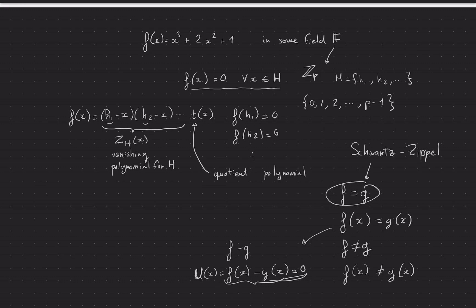And the number of x's that solve this equation cannot be bigger than the degree of that polynomial, which cannot be bigger than the individual degrees of f and g. And I'll let you think about that but I'm not going to go more into the details.